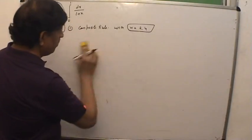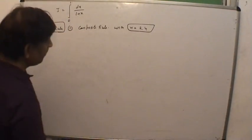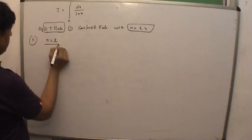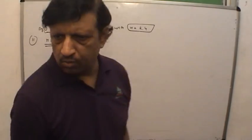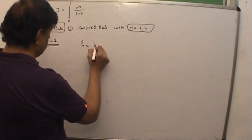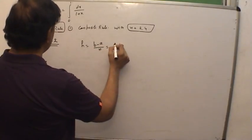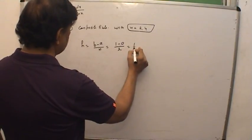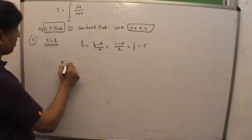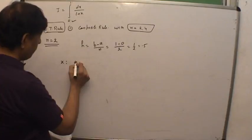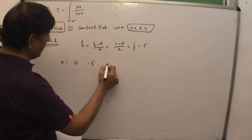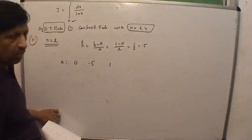The procedure is almost the same — only the writing and working differ slightly. For the second method with n=2, we first find h = (b - a)/n = (1 - 0)/2 = 0.5. The x values start at 0 with height 0.5: so x = 0, 0.5, and 1. We start with 0, add 0.5 to get 0.5, add 0.5 again to get 1, which is the last limit.